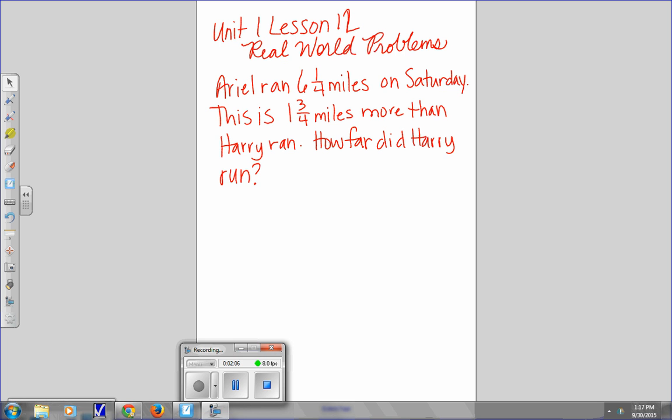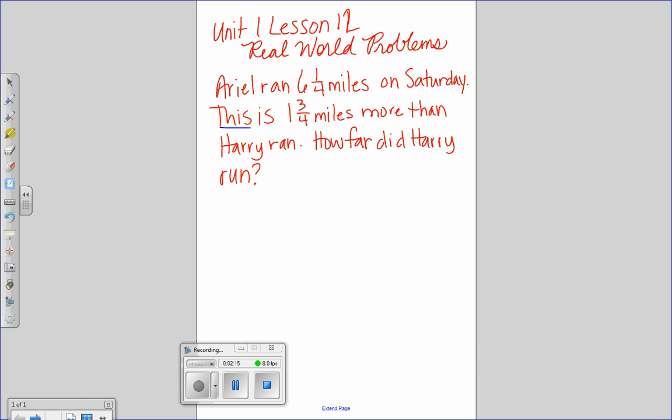It kind of did. It says, Ariel ran six and one quarter miles on Saturday. This is. What is that referring to? What is this? These two words right here. This is. What is this? Six and one quarter miles is the this is. So, did you hear the understanding pieces that you have to understand first?